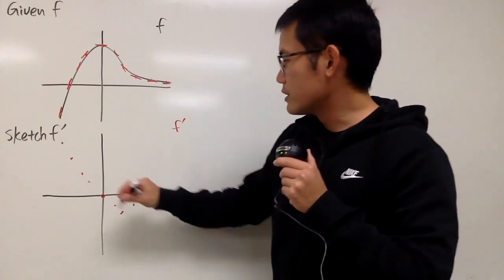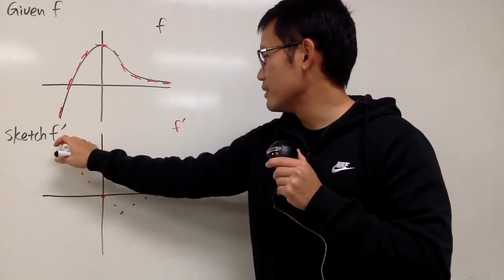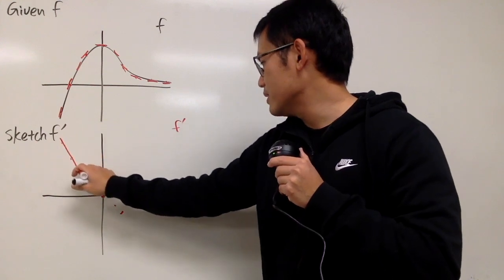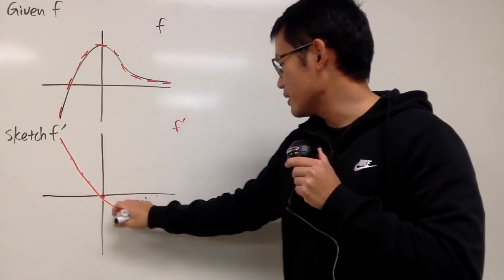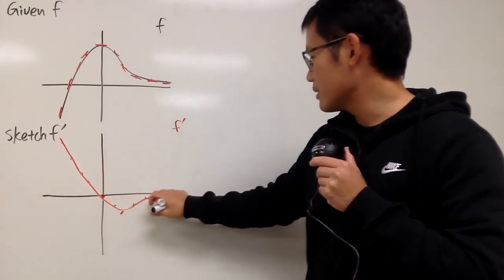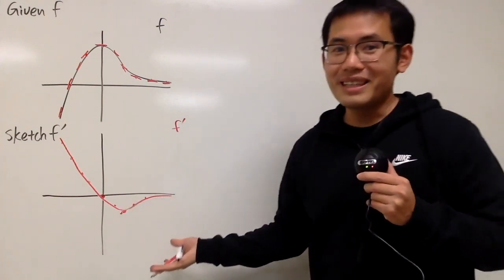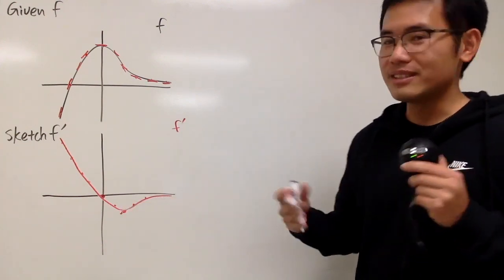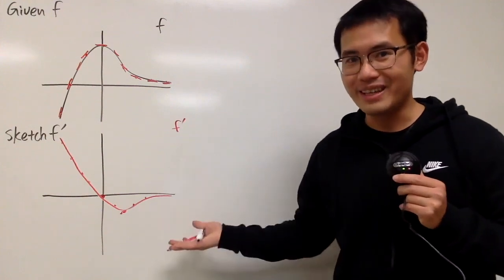So I will say the graph will look something like this — just kind of sketch this as a curve. We'll estimate as long as we get the right shape, that will be correct.